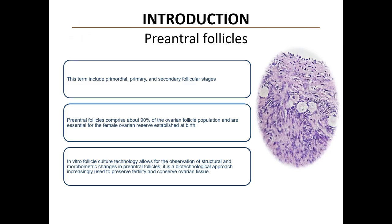Early follicular development is essential for ovarian functionality and fertility. Preantral follicles, which include primordial, primary and secondary follicles, represent critical stages in ovarian development. In vitro studies allow for the observation of morphometric changes in preantral follicles enclosed in cortical tissue.